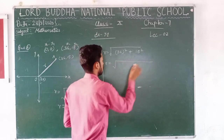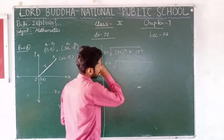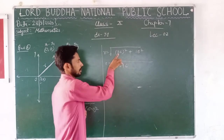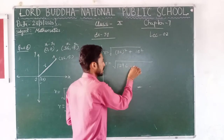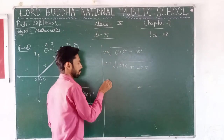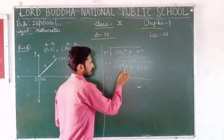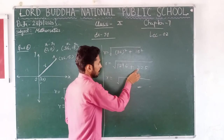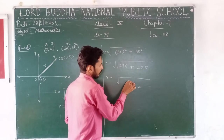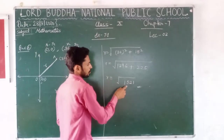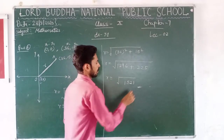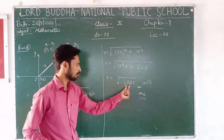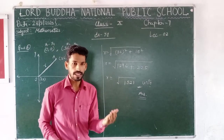Then it will be square root of: 36 whole square equals 1296, plus 15 squared equals 225. So r equals to square root of 1521. We can find that the square root of 1521 equals 39. So r equals to 39 units. That will be the answer of this question.